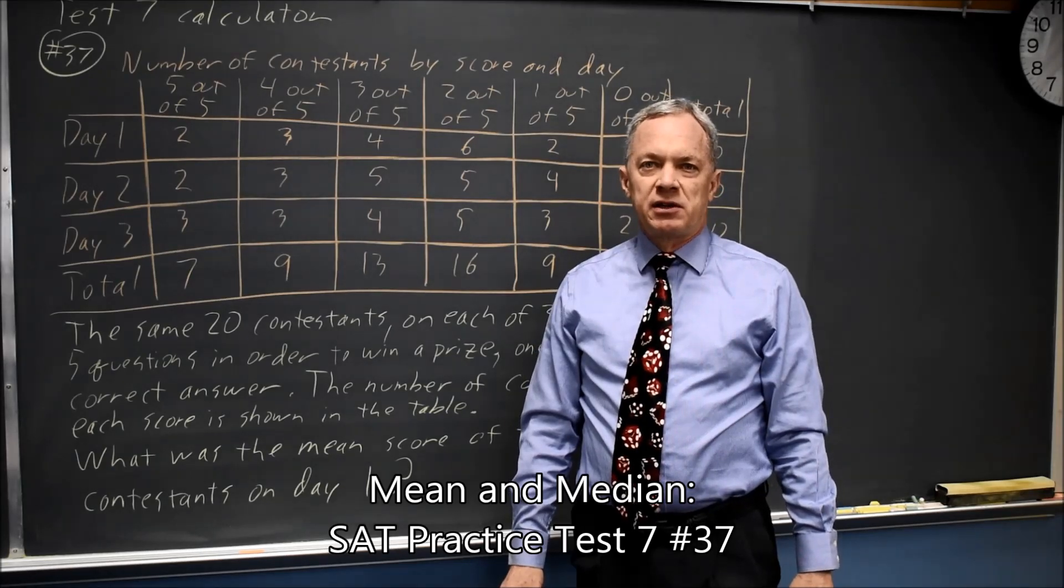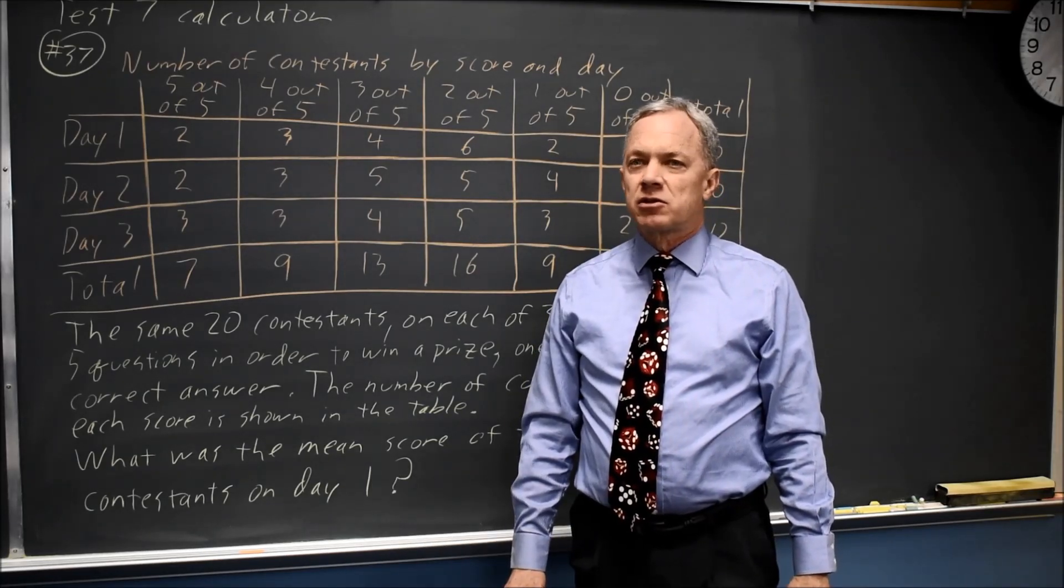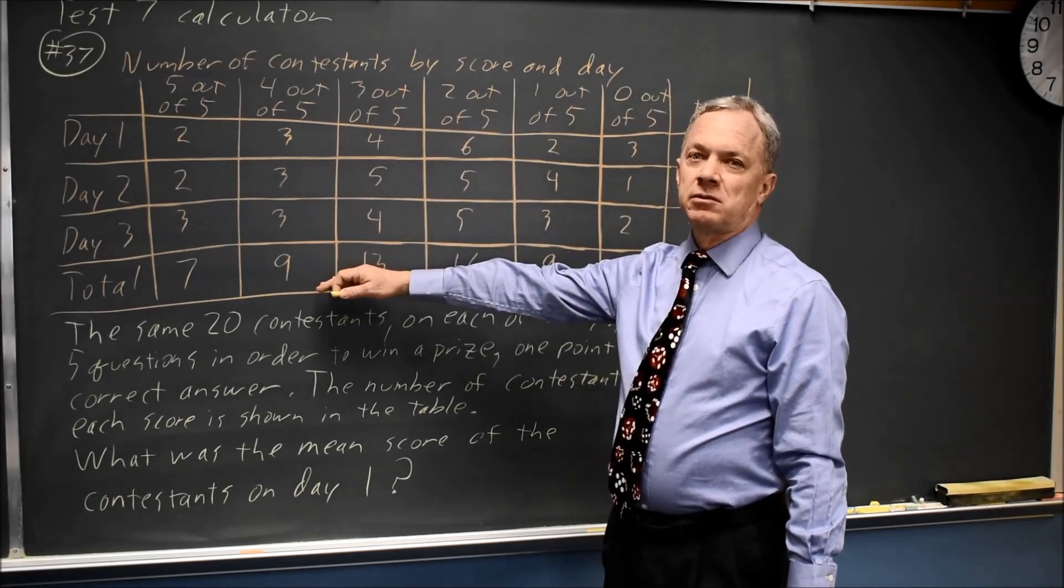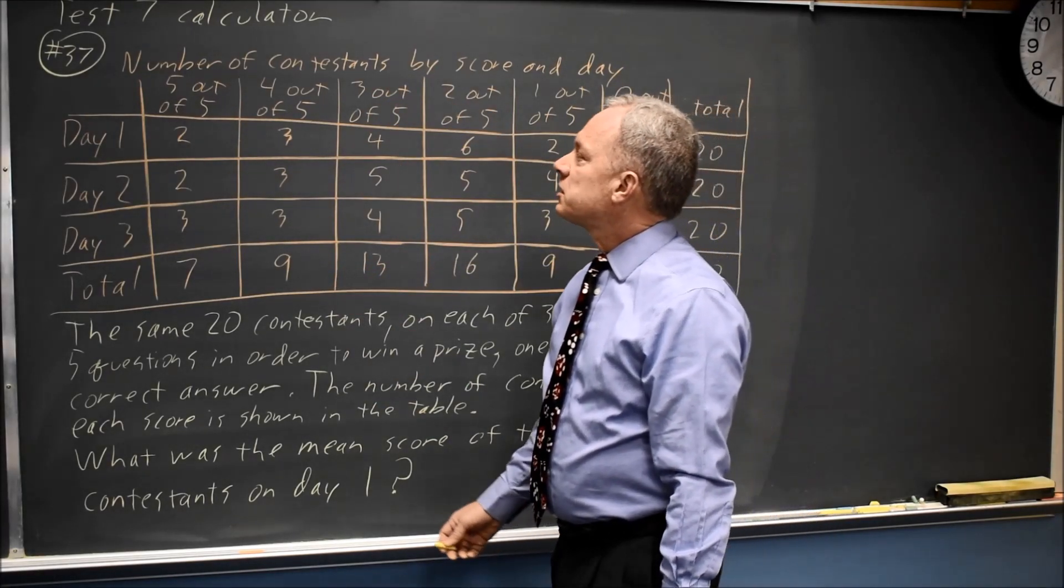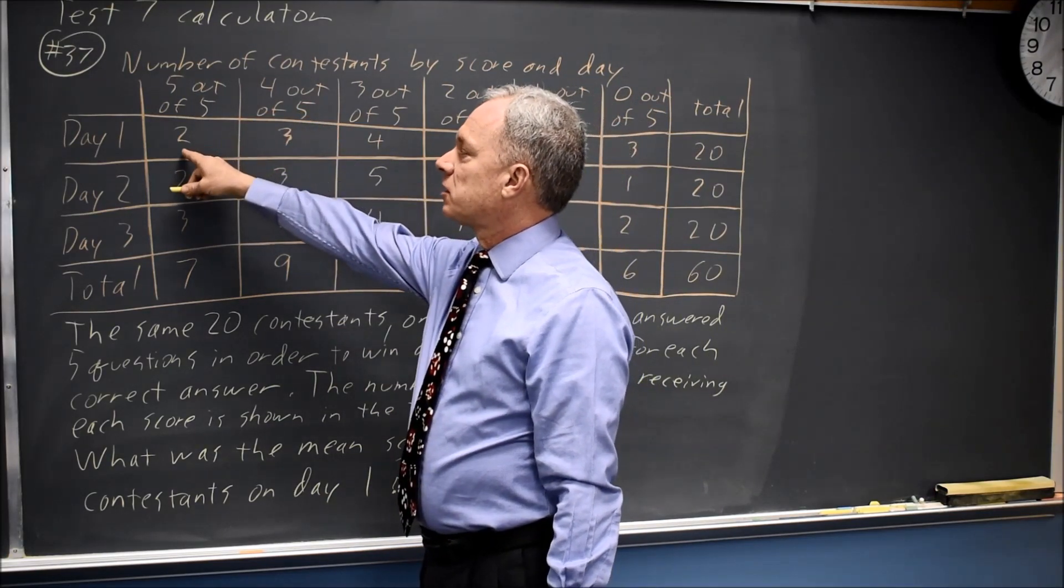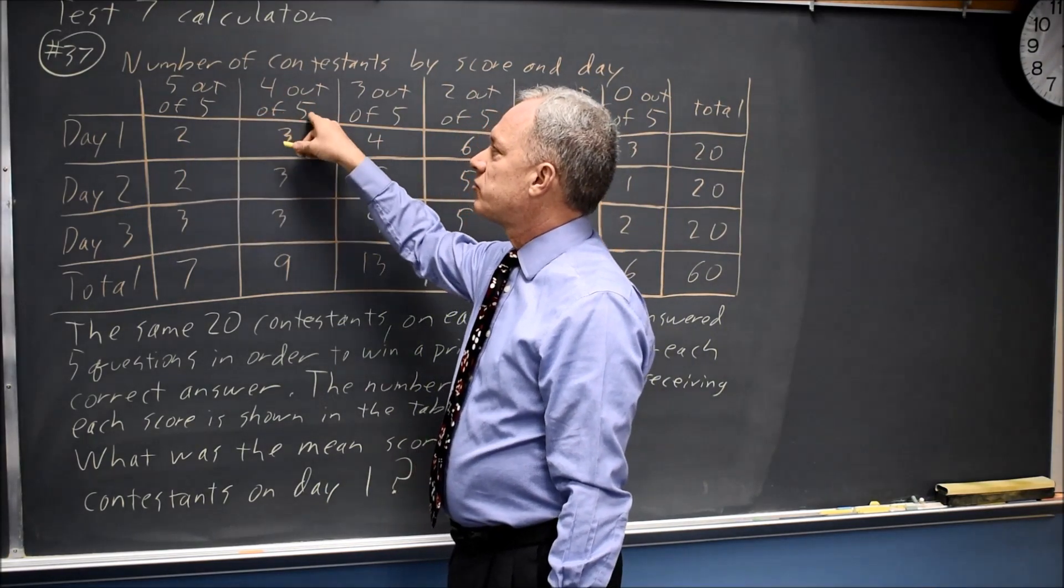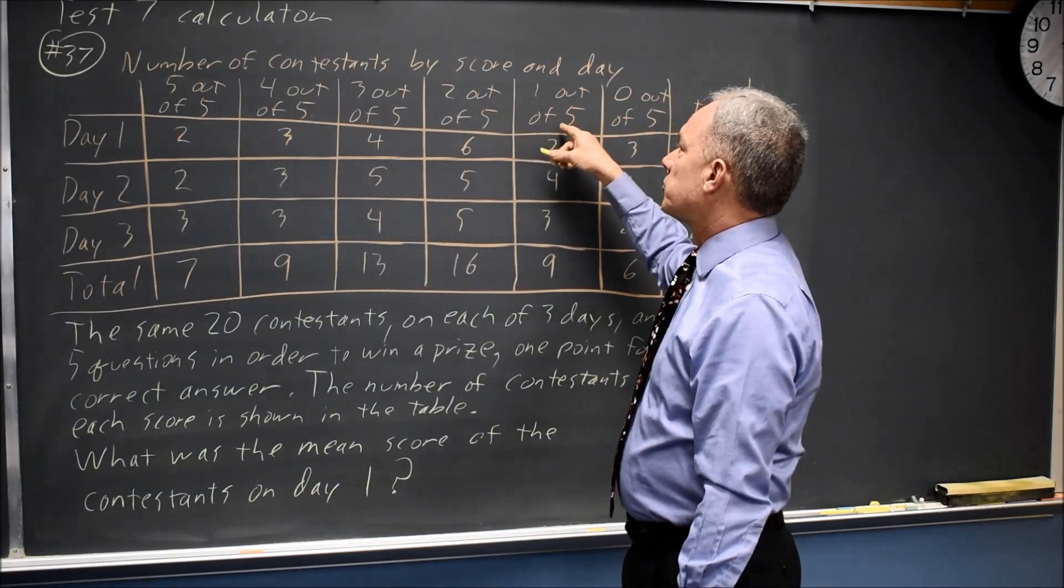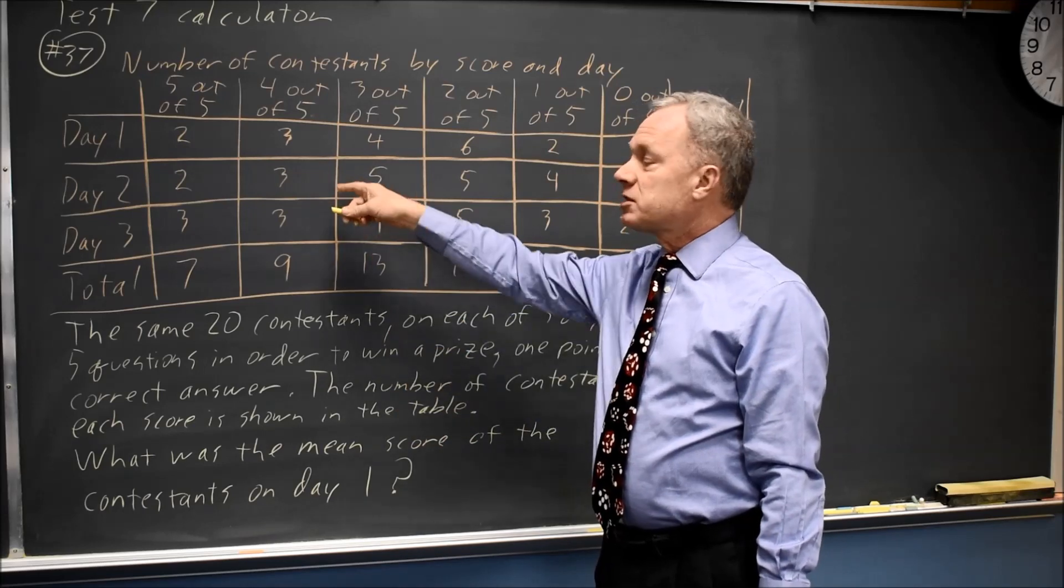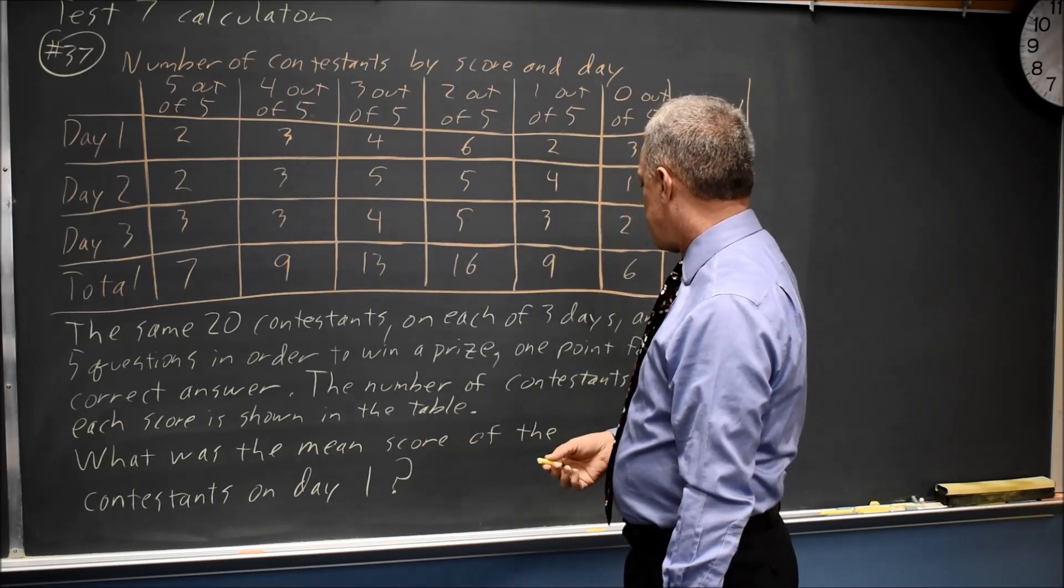This is SAT Test 7, Calculator Section, Question 37. College Board gives you a table with a long description. Basically, contestants are answering questions, and this is how many on each day got 5 out of 5 right, 4 out of 5, 3 out of 5, 2 out of 5, 1 out of 5, or 0 out of 5, where their score in the table is the number they got right on that day.